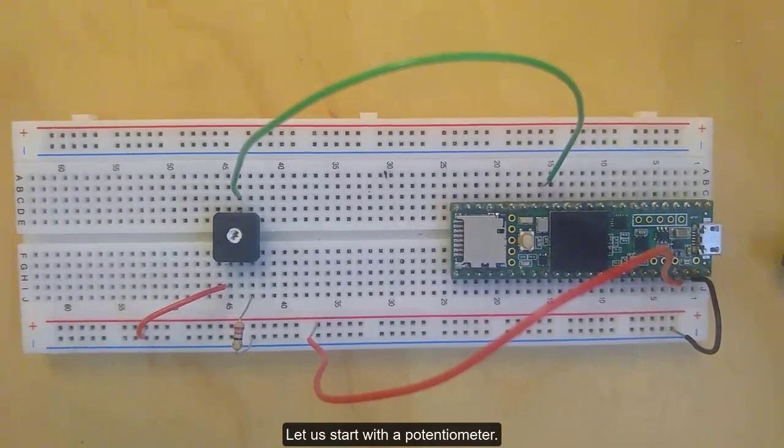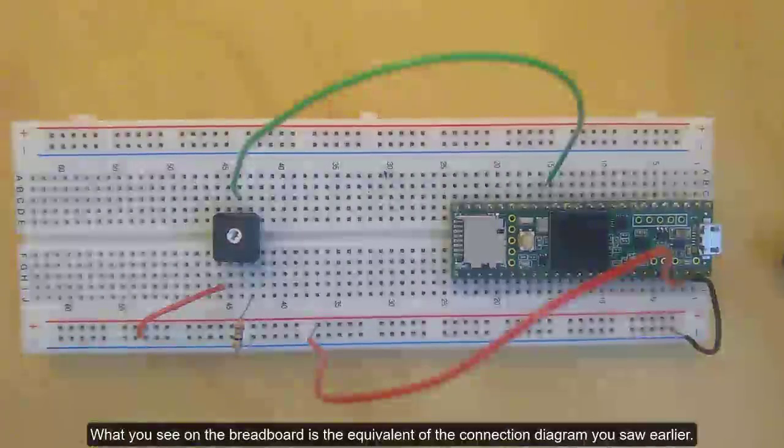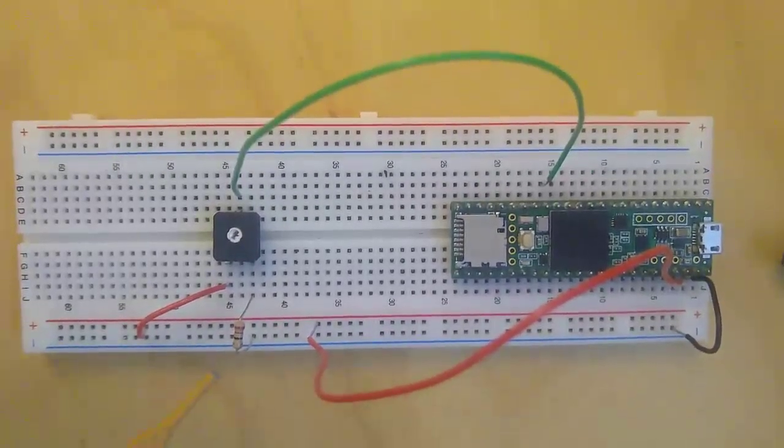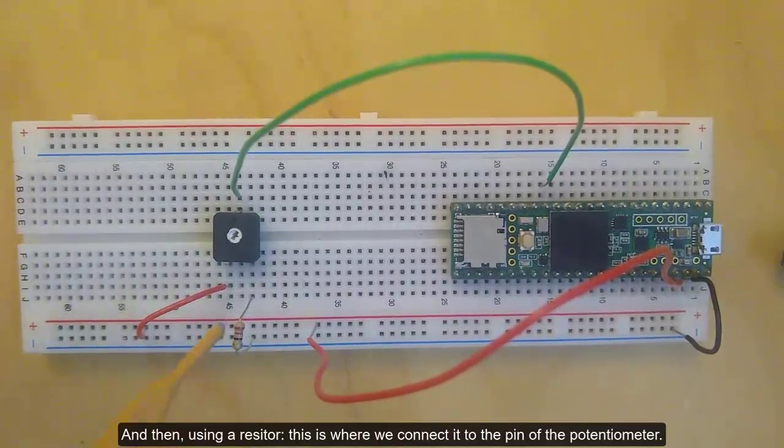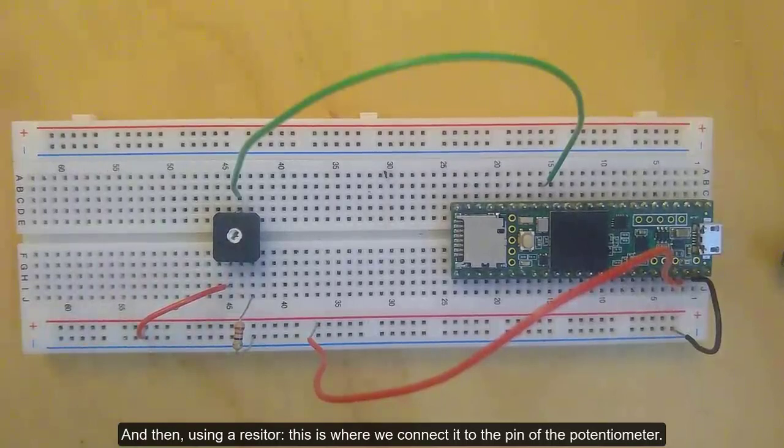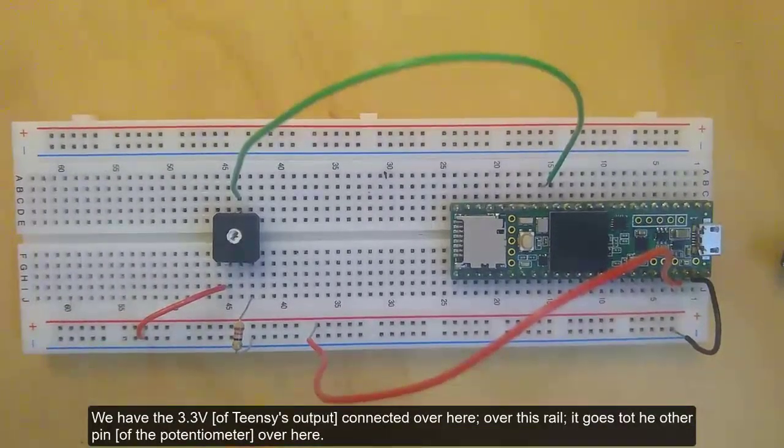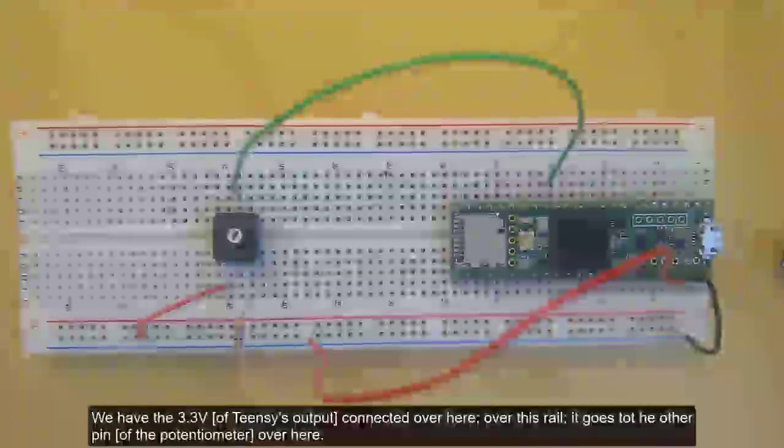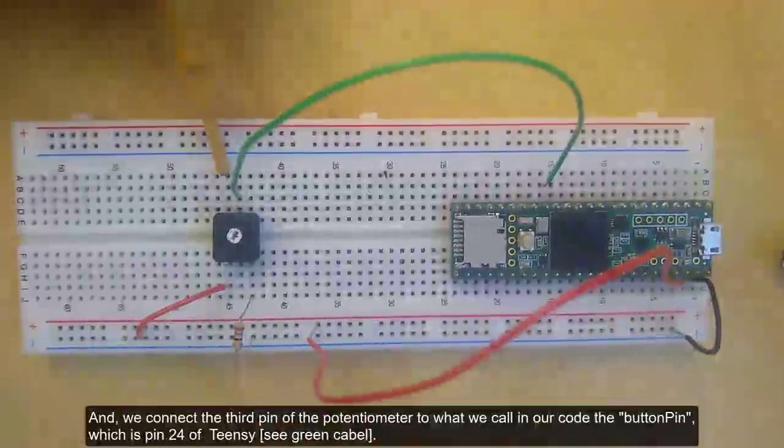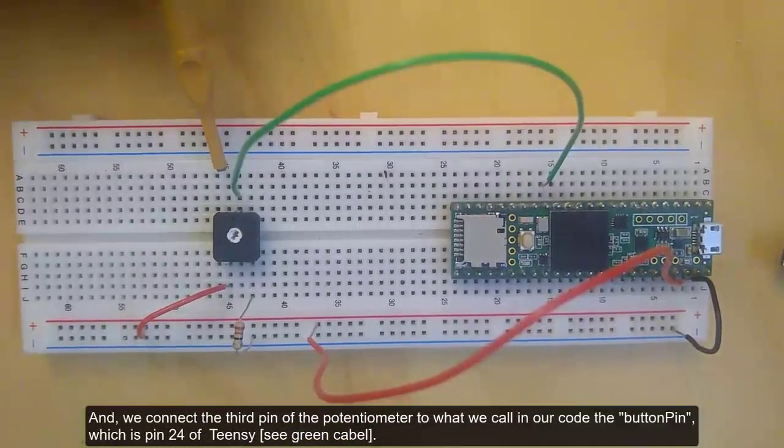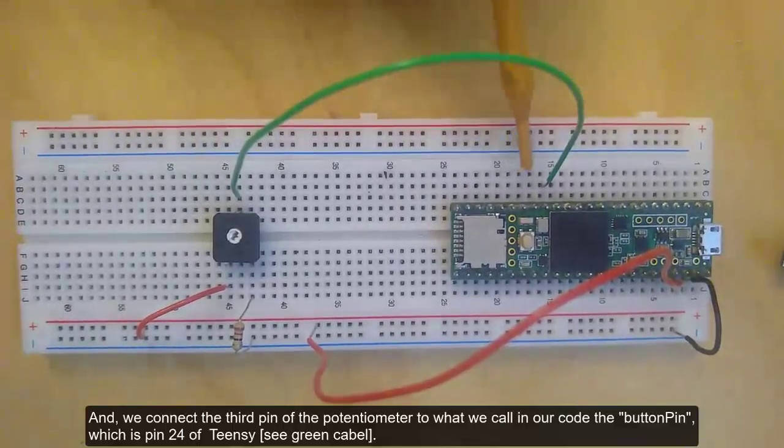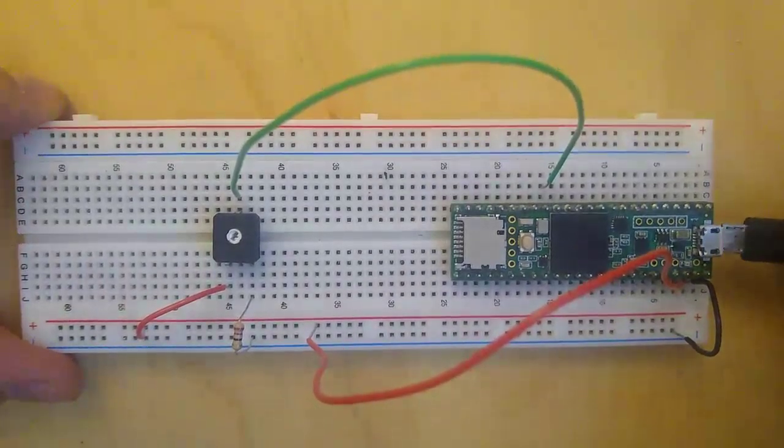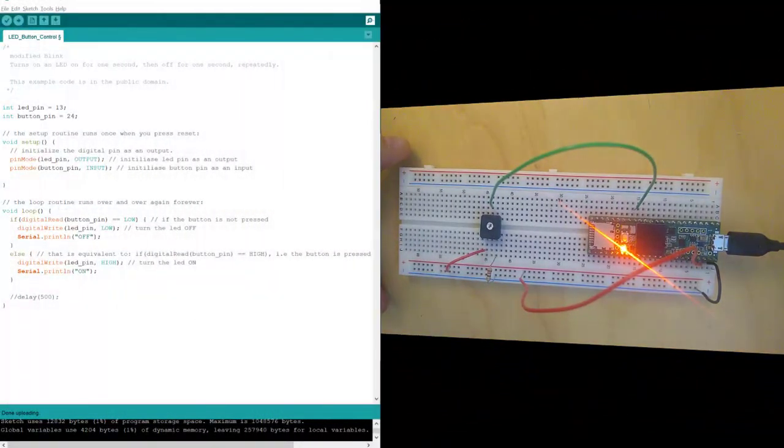What you see on the breadboard is the equivalent of the connection diagram you saw earlier. We get the ground, and then using a resistor, this is where we connect it to the pin of the potentiometer. We have the 3.3 volts connected over here, over this rail, goes to the other pin over here. And we connect the third pin of the potentiometer to what we call in our code the button pin, which is pin 24 of Teensy.